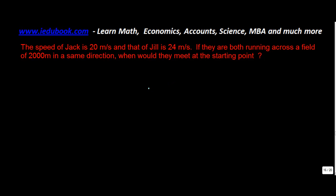Let's read the question. The speed of Jack is 20 meters per second and that of Jill is 24 meters per second. If they are both running across a field of 2000 meters in the same direction, when would they meet at the starting point?